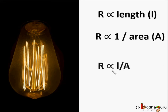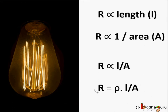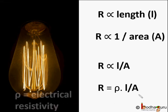If we combine these two relationships, we get R is proportional to L divided by A. We introduce a constant rho to make it an equation, so resistance R is equal to rho multiplied by length divided by area. Here rho is the constant of proportionality and is called the electrical resistivity of the material of the conductor.